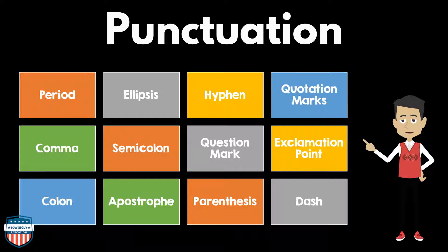The punctuation that we're going to be discussing in this episode consists of the period, ellipsis, hyphen, quotation marks, comma, semicolon, the question mark, exclamation point, colon, apostrophe, parenthesis, and the dash.